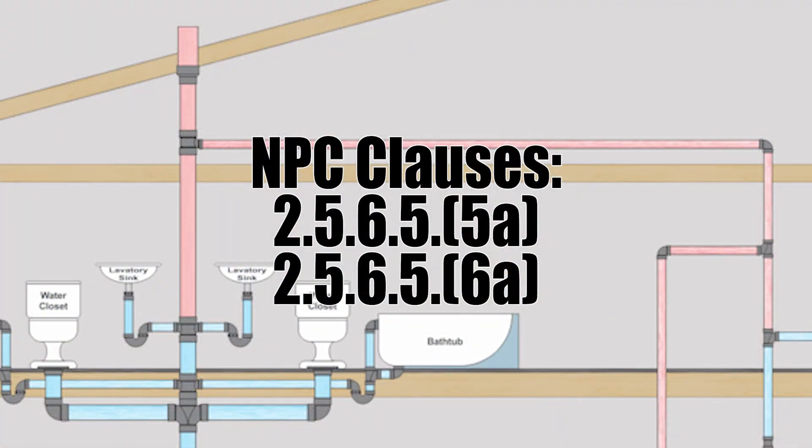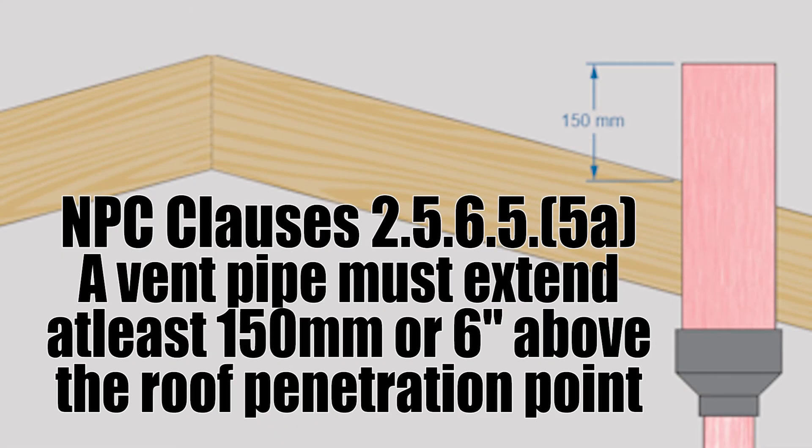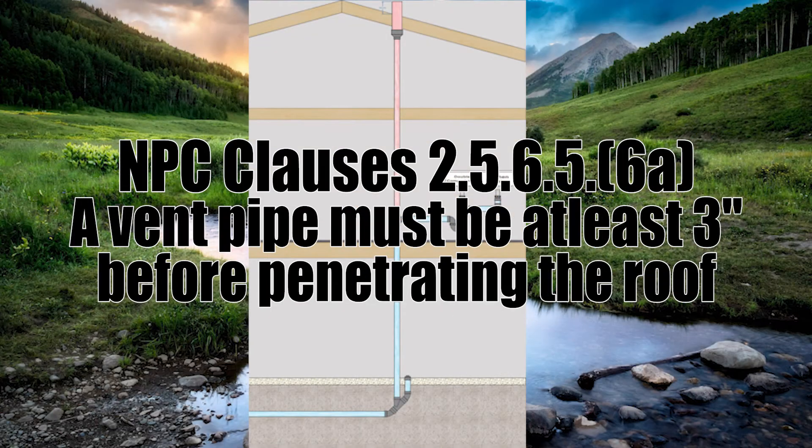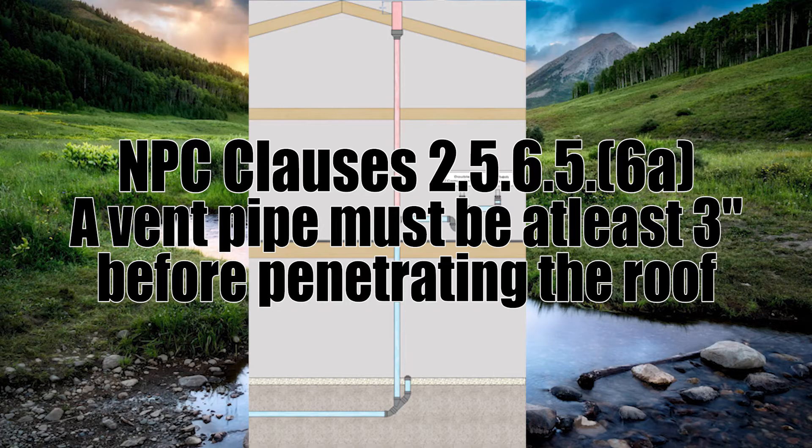None of my diagrams actually showed the roof flashing but they need to be there according to clause 2.5.6.5 5b. The last thing I want to point out comes from clauses 2.5.6.5 number 5 and 6. That vent pipe needs to extend at least 150 millimeters or about six inches above the roofline. And also if it were a different vent penetrating from something else it would need to be minimum three inches.